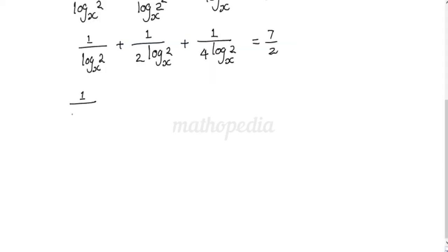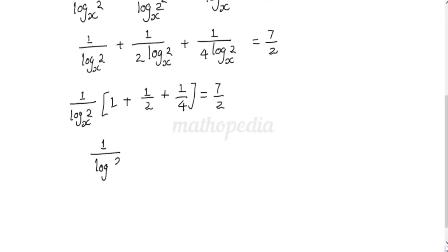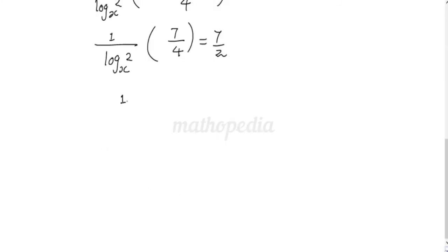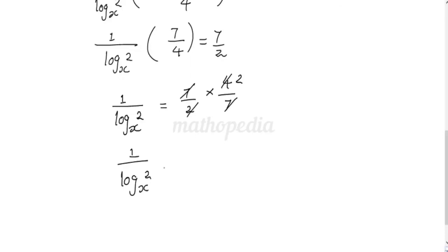Now, taking out 1 by log 2 base x as common and taking 4 as the LCM, we get 4 plus 2 plus 1 equal to 7 by 2. That is, 1 by log 2 base x into 7 by 4 is equal to 7 by 2. That is, 1 by log 2 base x is equal to 7 by 2 into 4 by 7. Cancelling 7 and 4, we get 1 by log 2 base x is equal to 2.